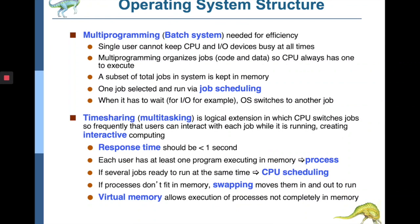In the previous section we discussed the hardware — a single CPU, multiple CPUs, or different CPUs with different numbers of cores working together connected through a shared network. Now, coming to operating system structure, the job of the operating system is to efficiently use all resources. Our hardware is the resource which the operating system manages by running multiple programs, processes, and threads.